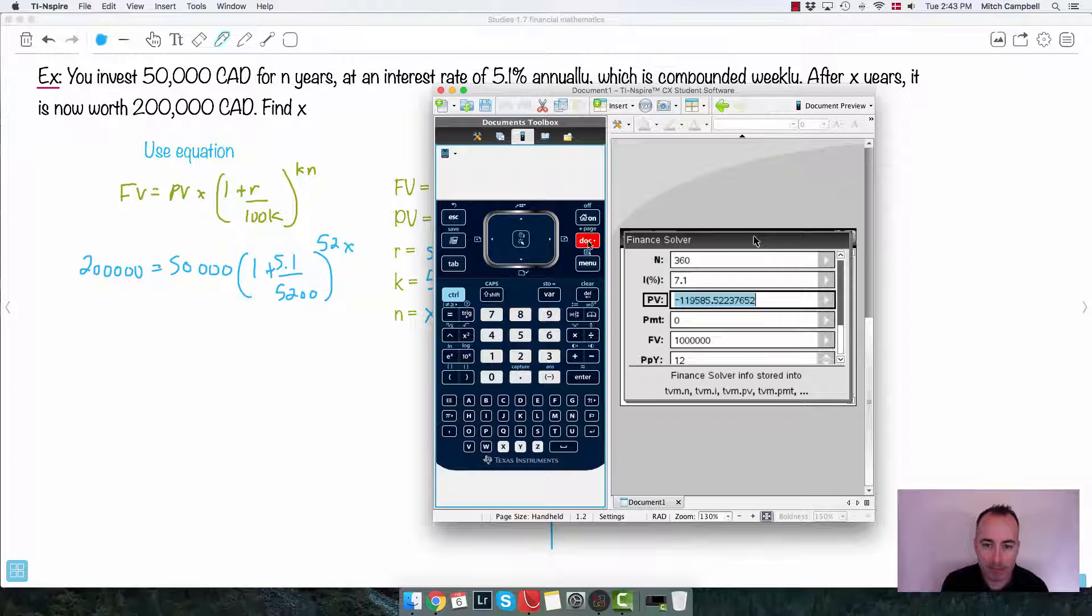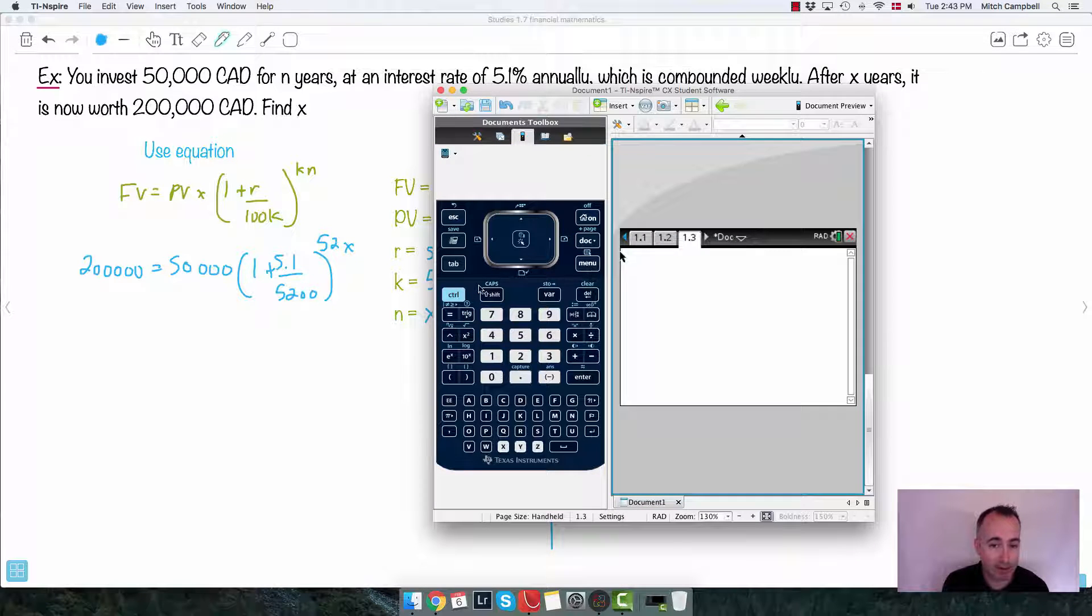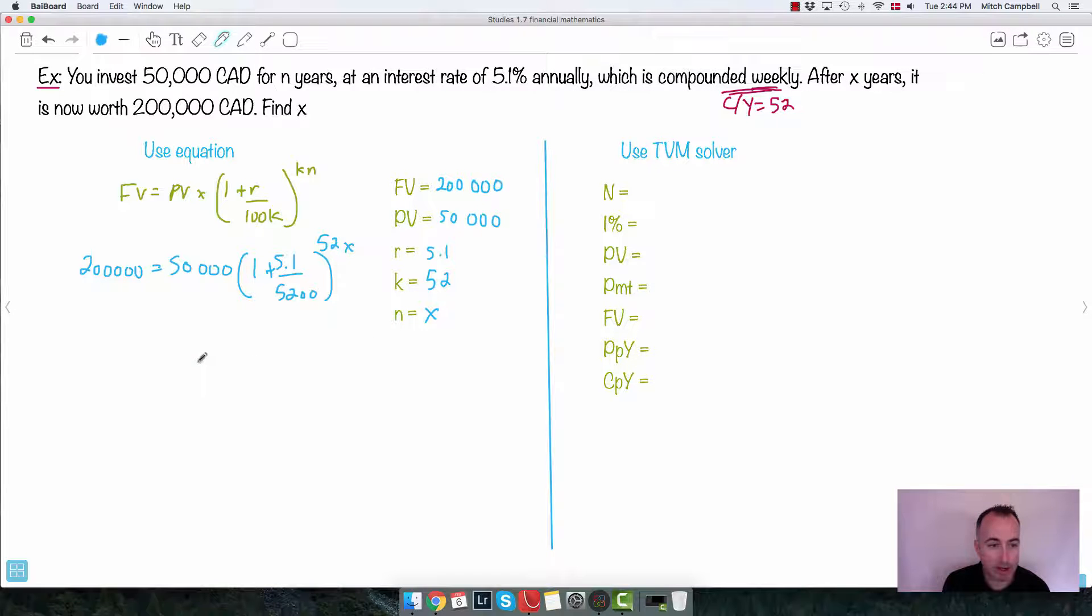So I'm going to do a new page. I'm just going to do a regular calculator here, and I'm going to ask my calculator to do n solve. So I'm going to do menu, algebra, numerical solve. I'm just going to ask it to do this whole thing for me because I don't like this equation. So I'm going to ask my calculator to solve it all for me. So 200,000 equals 50,000 times open bracket 1 plus, I need a fraction, 5.1 over 5200, bring it to the power of 52X. I do comma. I'm going to put an X. I get a number of 27.2 years. So X equals 27.2 years. So that was one way to solve this. That's not so bad, except you had to use n solve because it got a little bit gross.